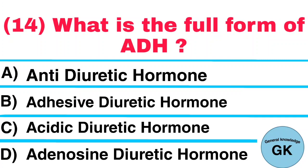Question number 14. What is the full form of ADH? A. Anti-diuretic hormone. B. Adhesive diuretic hormone. C. Acidic diuretic hormone. D. Adenosine diuretic hormone. Answer: Anti-diuretic hormone.